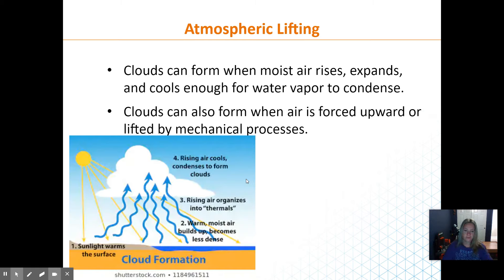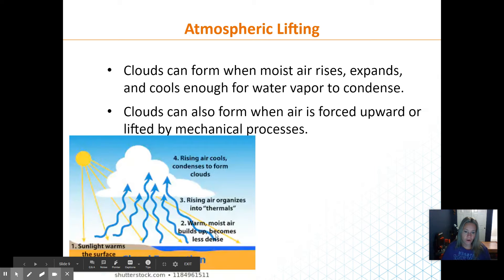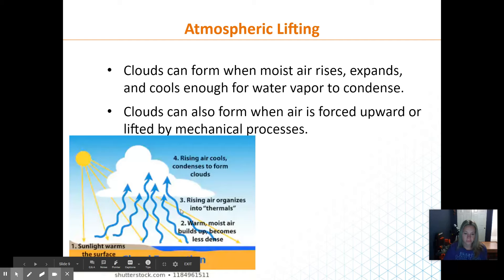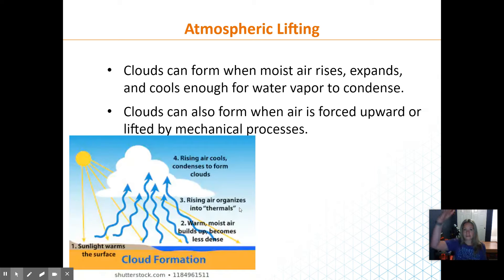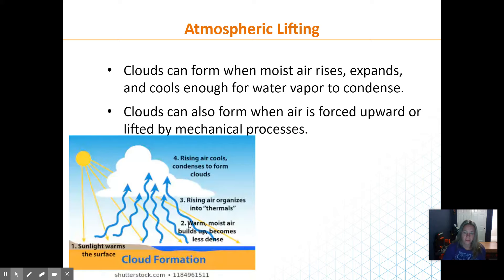Here are the steps of cloud formation. Sunlight warms the surface, then warm moist air builds up because of evaporation, becomes less dense, and rises. It organizes into what's called thermals — heat that's rising. Some birds like to ride those thermals and lift because of the rising air. Small glider-type airplanes will also rise and stay aloft because of thermals. Then the rising air cools and condenses to form clouds — that flat part at the bottom of the cloud is where it's reached the saturation point.